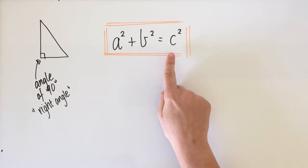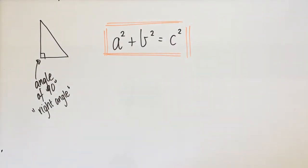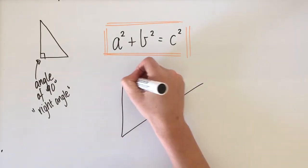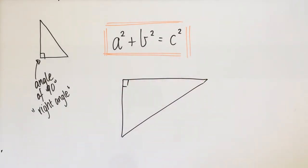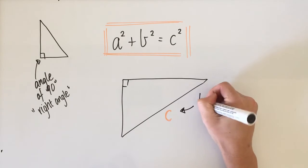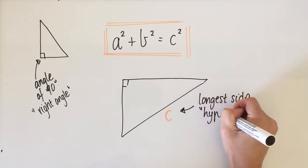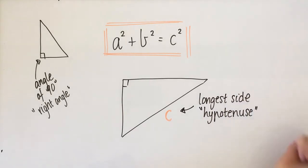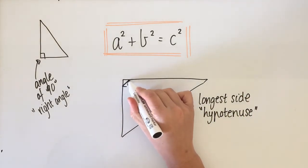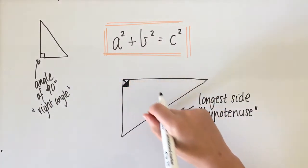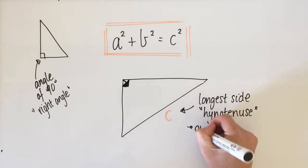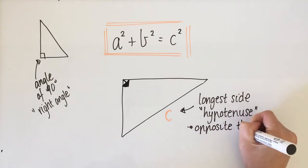Each one of these letters corresponds to a side in a triangle. C is always our longest side — there's another word for this: the hypotenuse. That's just the fancy maths word for the longest side. Another way to remember what c is, other than it being the longest, is that it's opposite the right angle. You can turn the right angle into an arrow and it points to the hypotenuse.